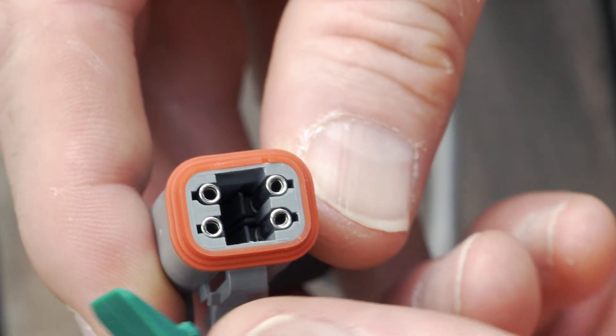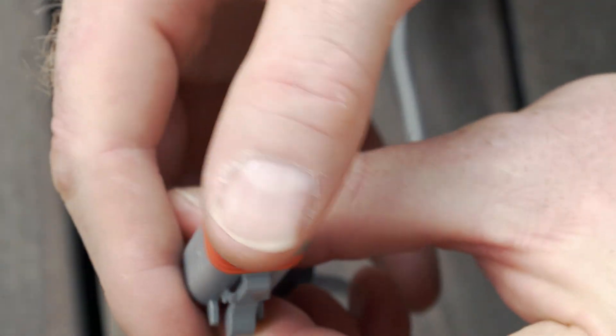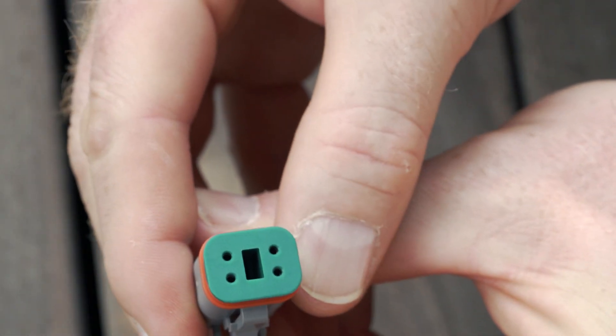Then take the wedge lock which keeps the sockets aligned properly and press it down into the hole. Apply pressure until you again feel and hear a click. At that point you should have a perfectly installed connector.